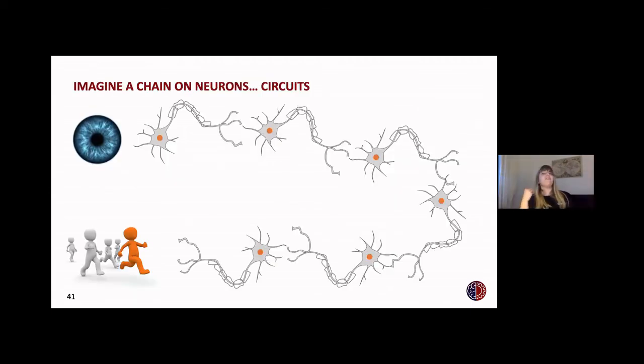For every task we complete, even for the very simple ones, thousands of neurons need to work properly and collaborate. And neurons form very complex connections that may differ from one person to another.